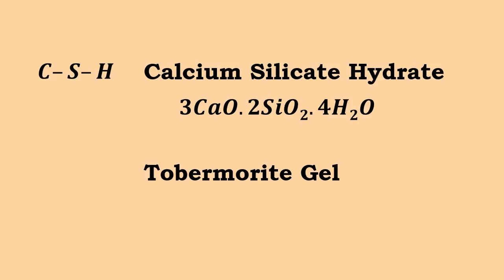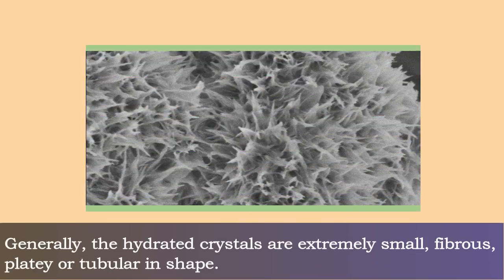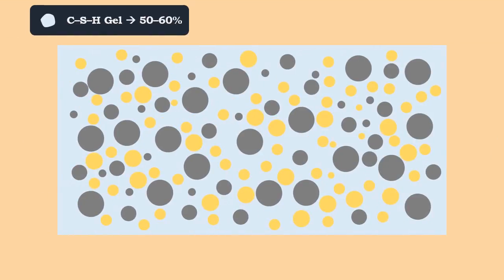Generally, the hydrated crystals are extremely small, fibrous, platy, or tubular in shape. The CSH gel makes up 50 to 60 percent of the volume of solids in a completely hydrated Portland cement paste.